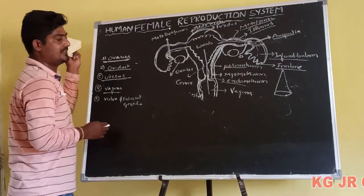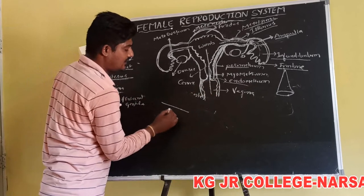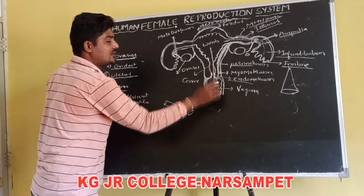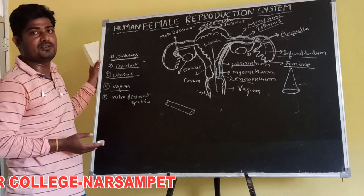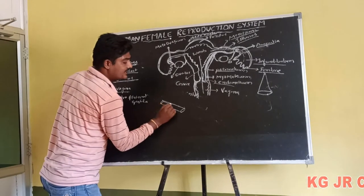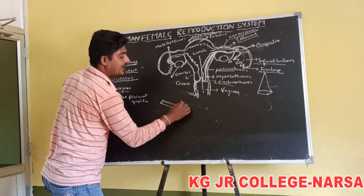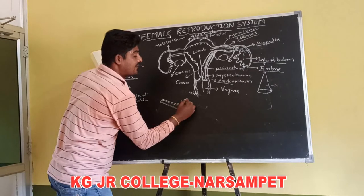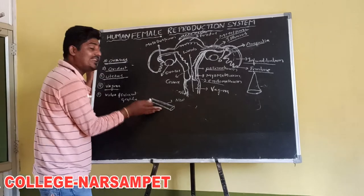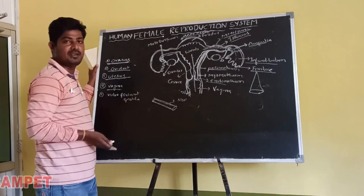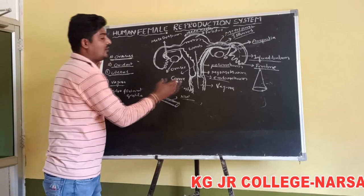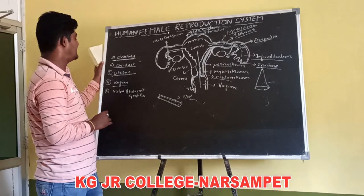The vagina is a large tube-like structure extending from the cervix to the vestibule, where the vestibule is the junction of the labia minora. The inner side of the vagina is lined by non-keratinized simple squamous epithelium tissue, and it is highly vascular with many folds present. The vagina opens into the vestibule at the vaginal orifice.